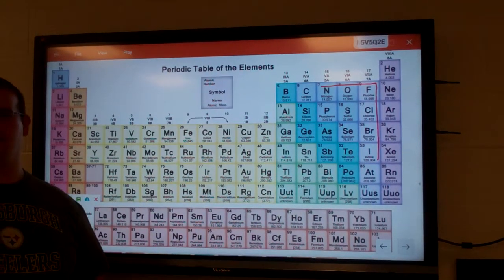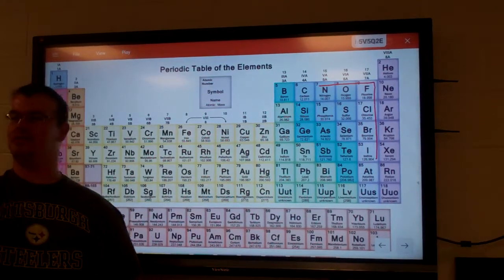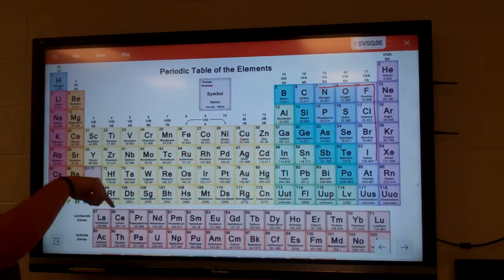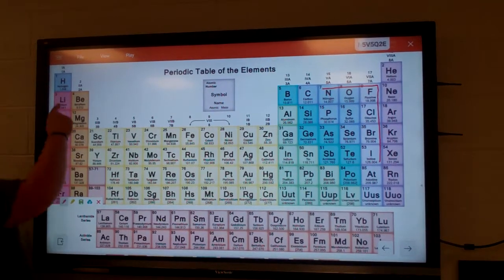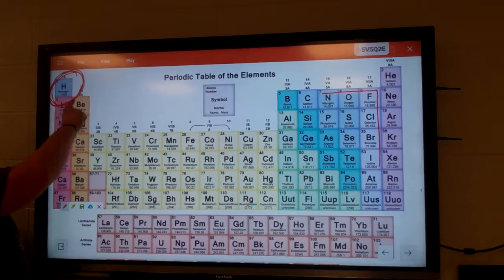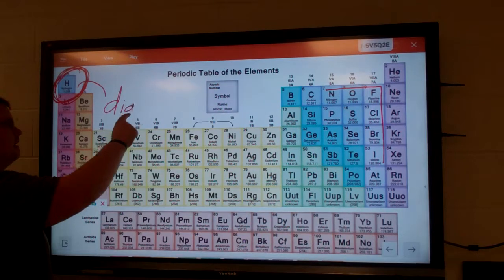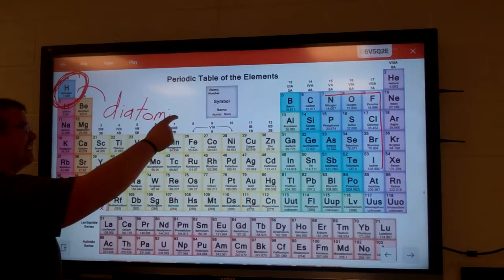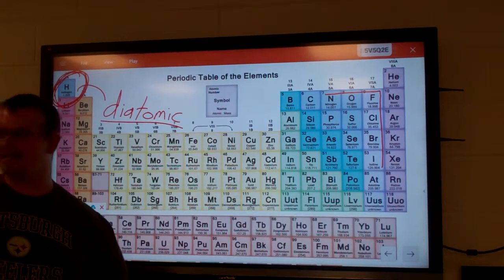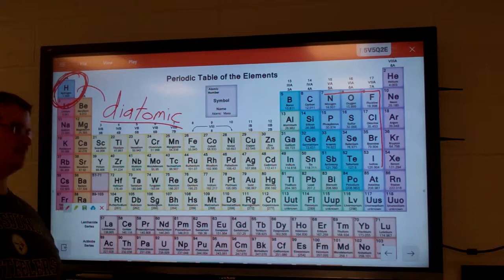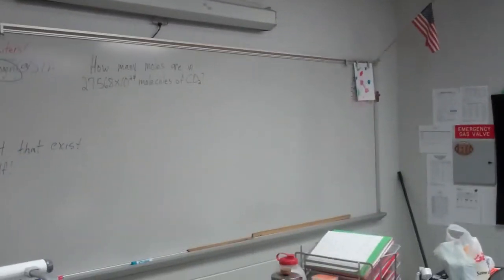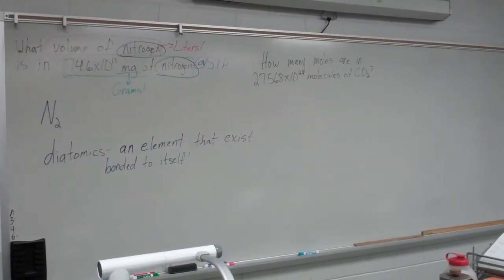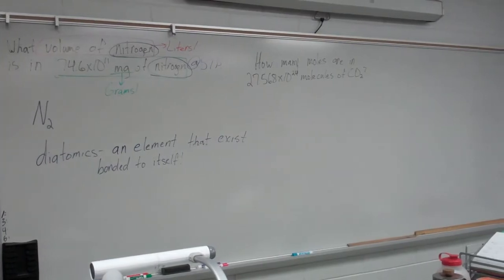There's one of these diatomics that is not within that number seven, because there's six that make that number seven. Hydrogen is a diatomic as well. That gives you your seven diatomics. There's the trick of how to find this. If you're watching the video, close your eyes. You may hand me the camera back.